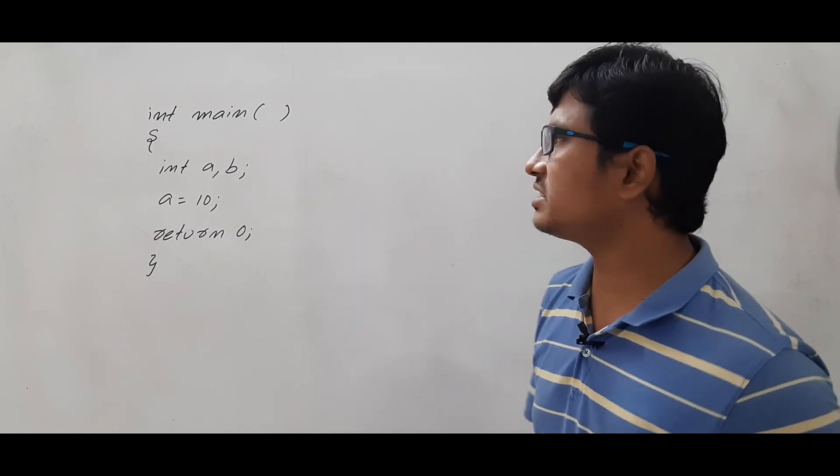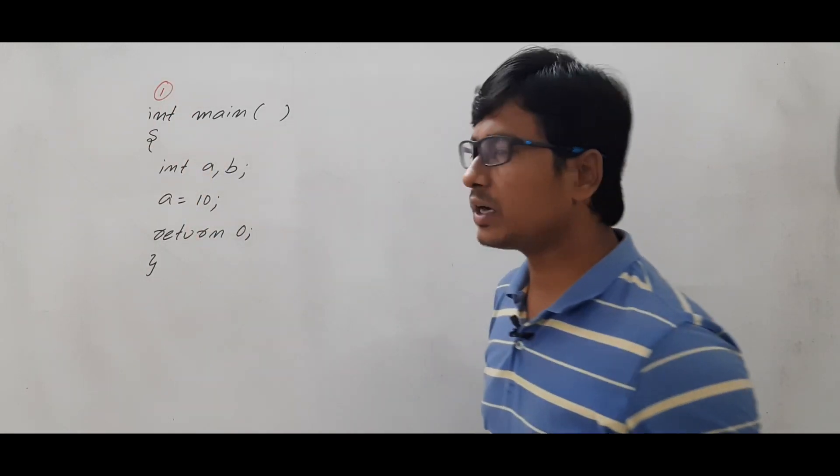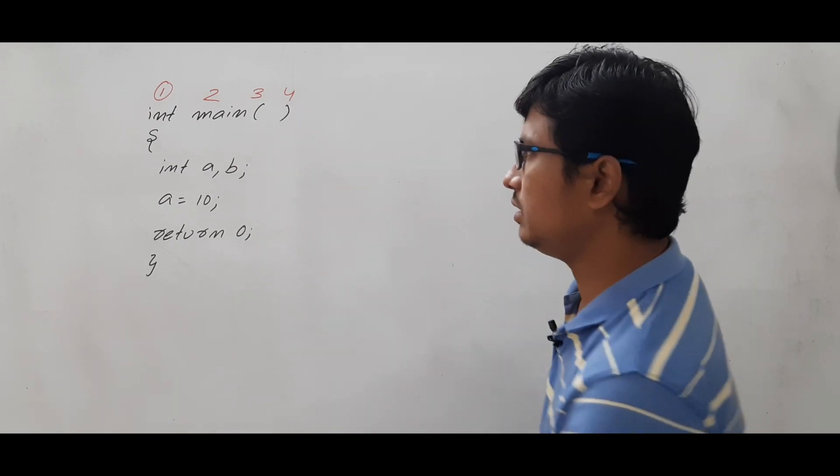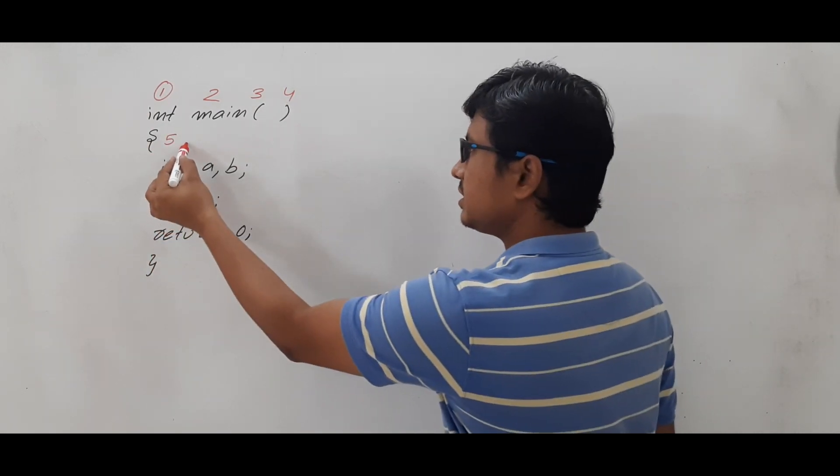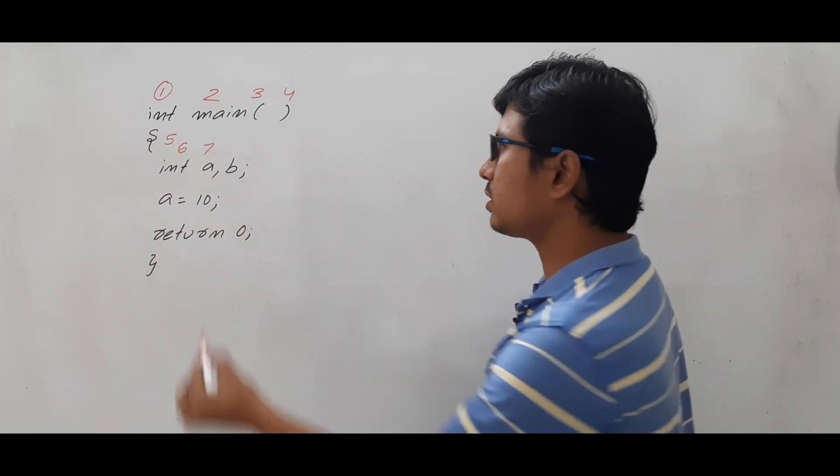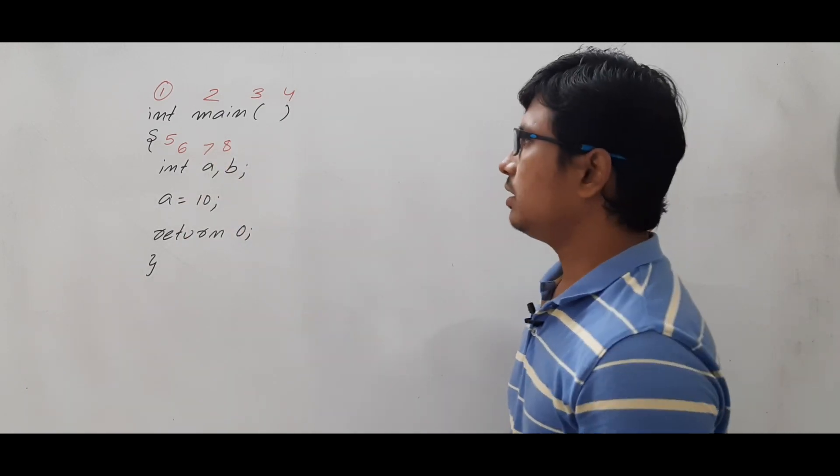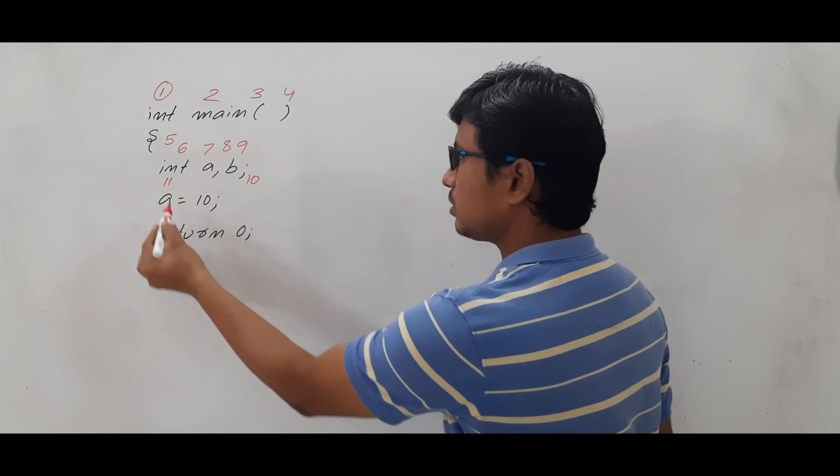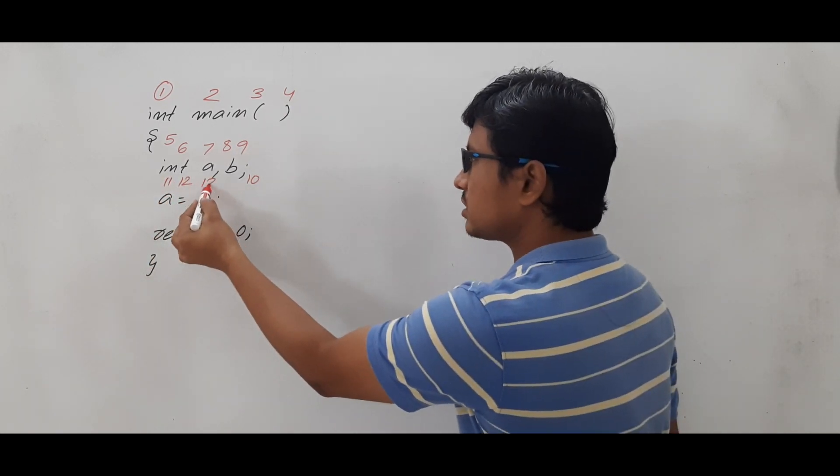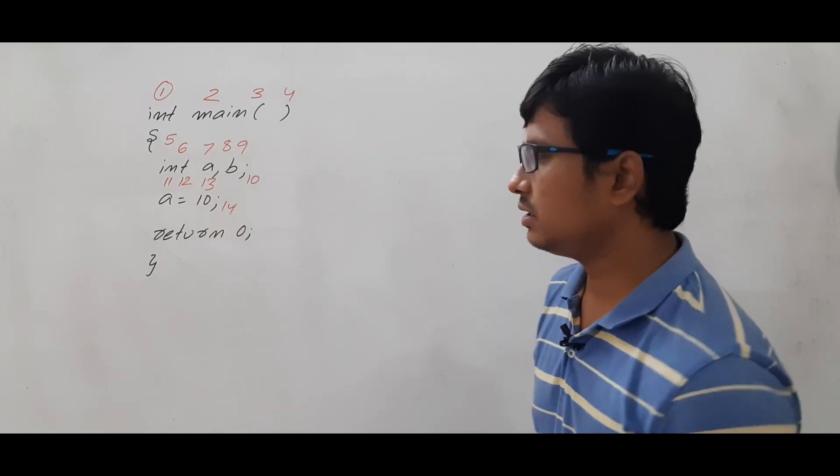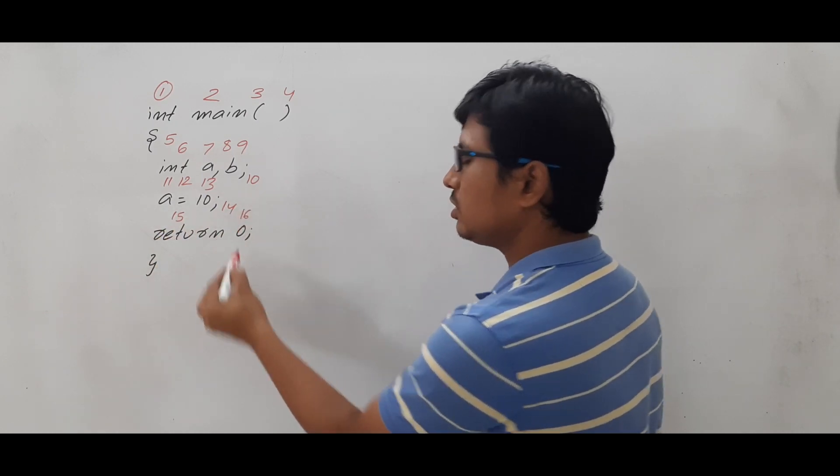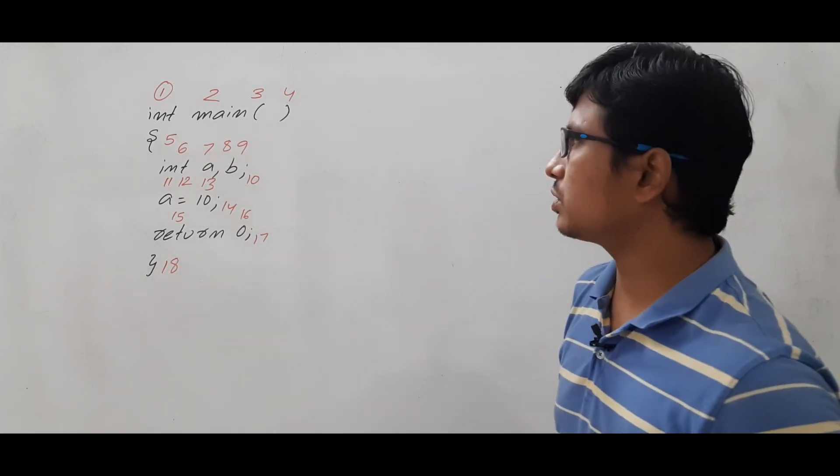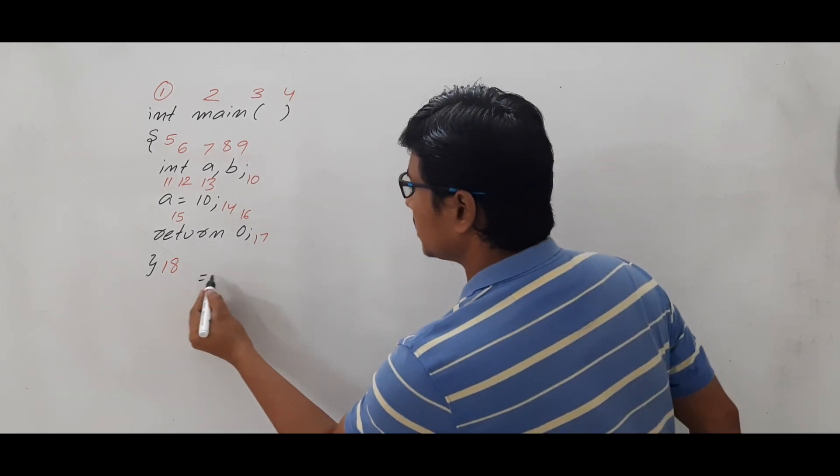Now can you tell me how many tokens it will generate? Int is a data type so it is one token, main is a function - another token, open braces is another token, close braces is another token, open curly braces is another token. Int is again a data type - a token. A is an identifier - another token. Comma is also a token, b is an identifier which is a token. Semicolon is an identifier - a token. 10 is a constant which is another token. 10 is a constant which is another token, and close braces is another token. So how many tokens are generated? The number of tokens generated is equal to 18.